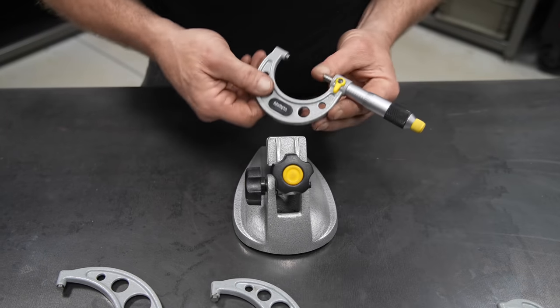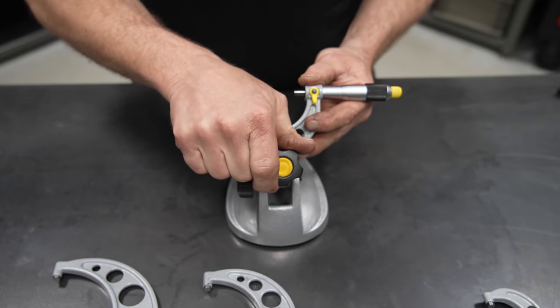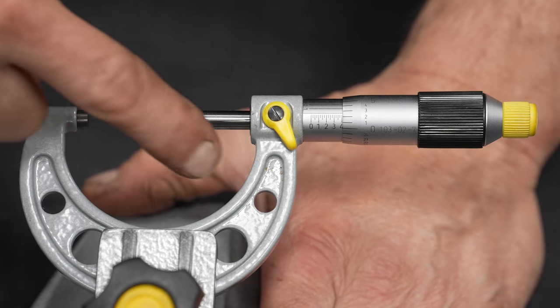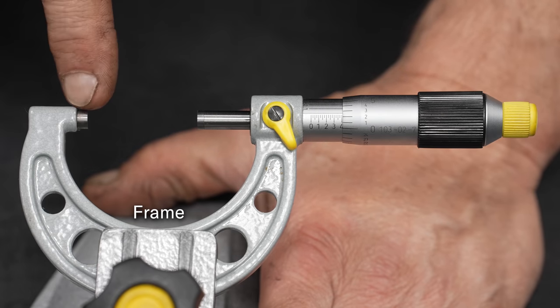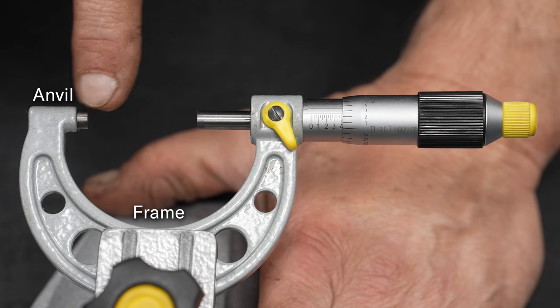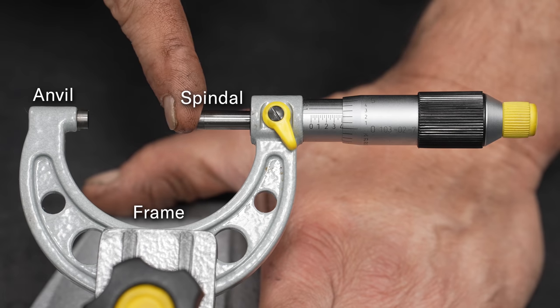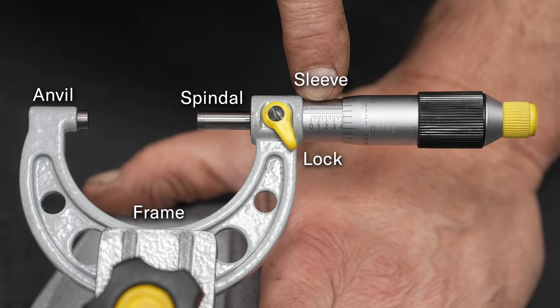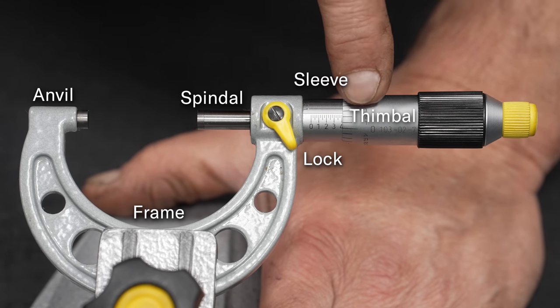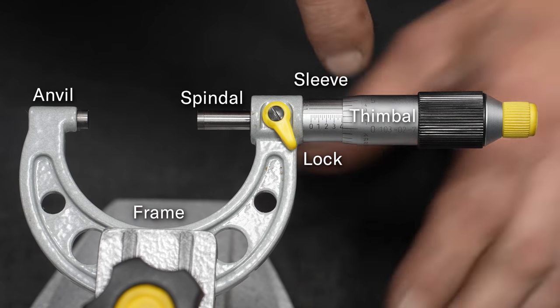Before we jump into measuring or how to read the mic, let's walk through the anatomy of the micrometer. Here's the basics of your micrometers. You have the C frame, you have an anvil and a spindle, and these two faces are precision ground. Then you have a lock, your sleeve which has some graduation to it, and then the thimble which also has some graduation, and then you have two grips.